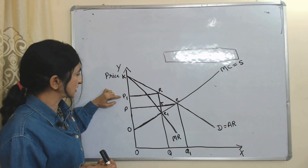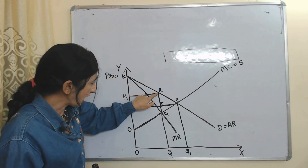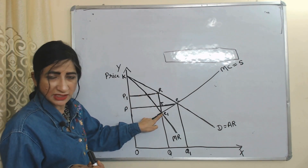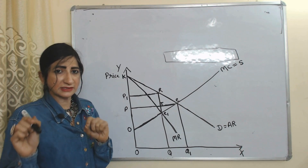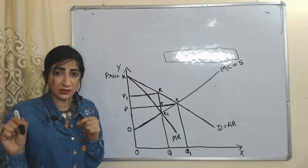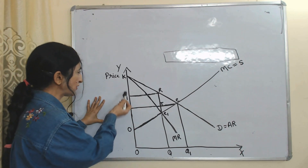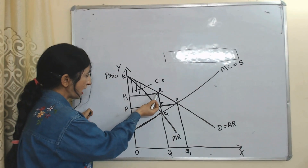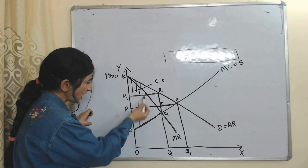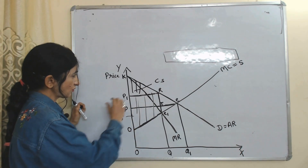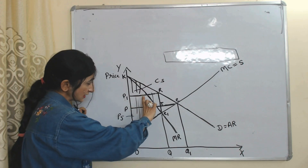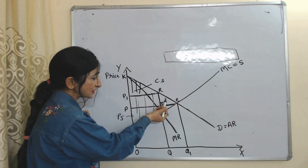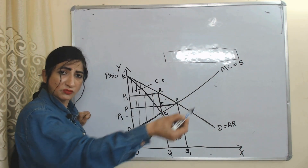In case of monopoly, consumer surplus is P1, K, R and producer surplus is O, P1, R, E1. E1 is the equilibrium point of monopoly. Please listen carefully because we are talking about our main topic — deadweight loss. In case of monopoly, the area P1, K, R belongs to consumer surplus and the area P1, R, E1, O belongs to producer surplus. So in case of monopoly, this part belongs to consumer surplus and this part belongs to producer surplus.